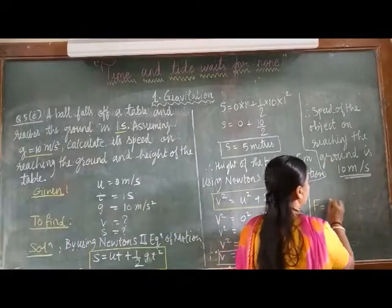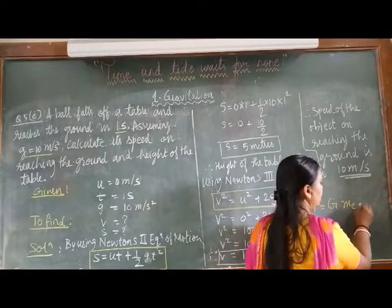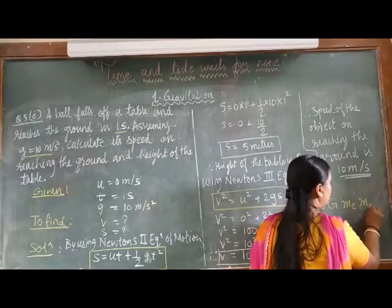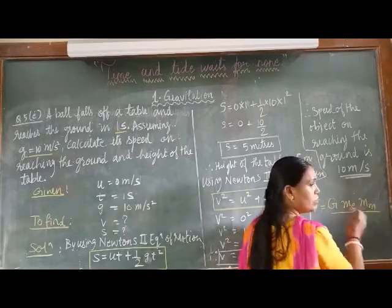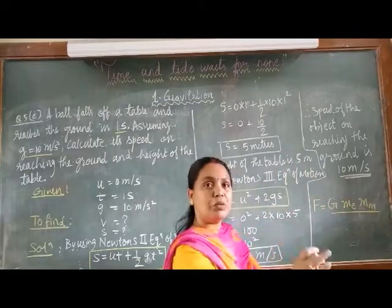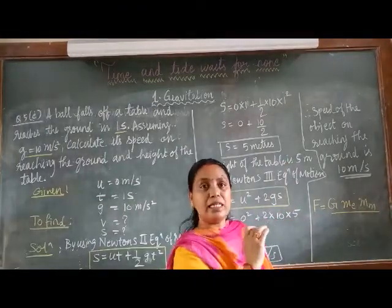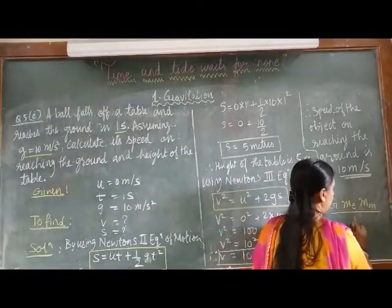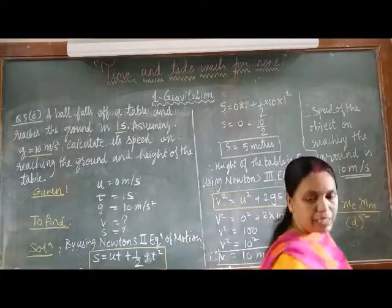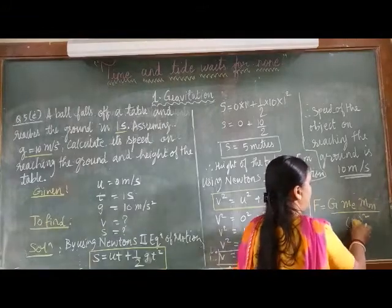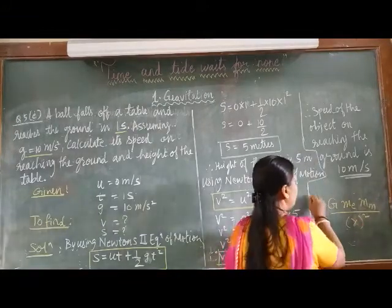Force of gravitation. You will use F equals G into M earth, that is mass of earth, mass of moon upon R square. The distance between the two planets. That is, distance between earth and moon. Distance square. Or you can also write R square. In this formula, directly you will substitute.